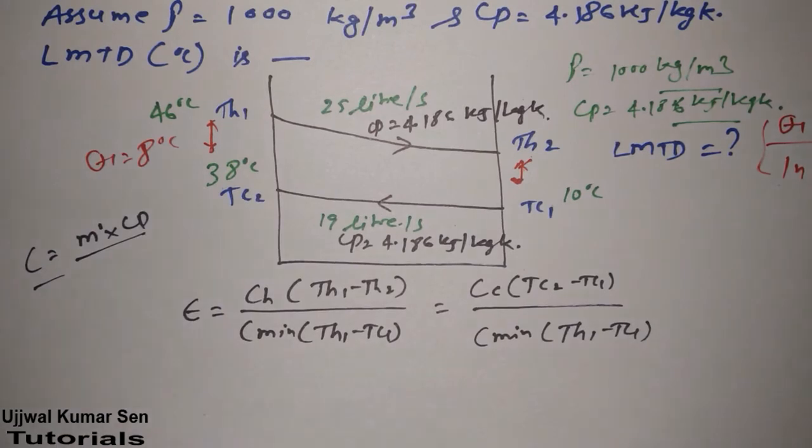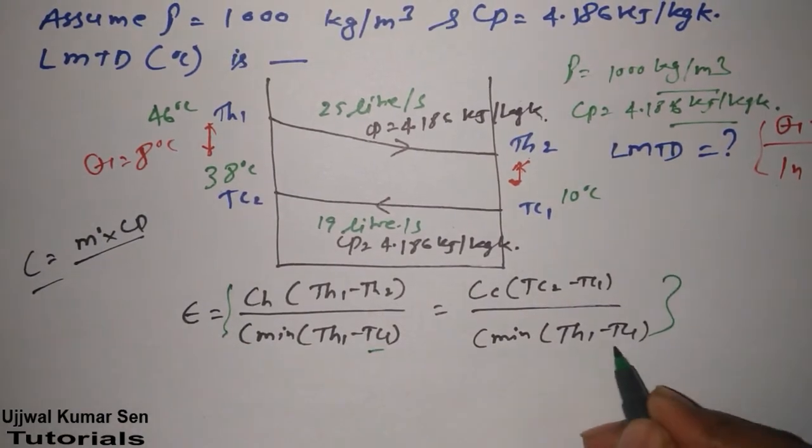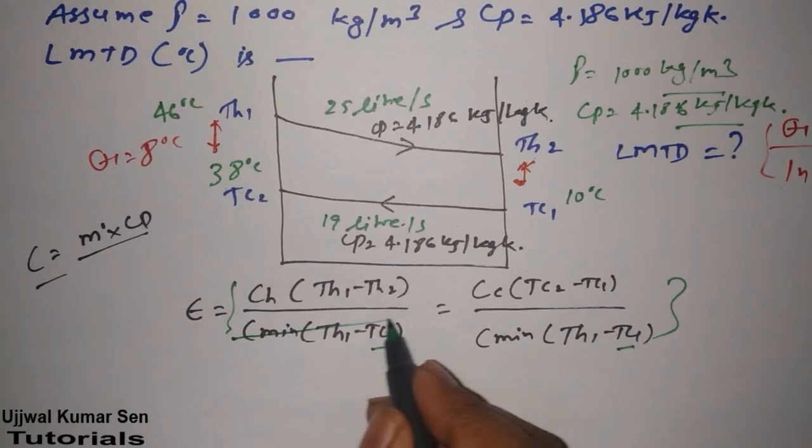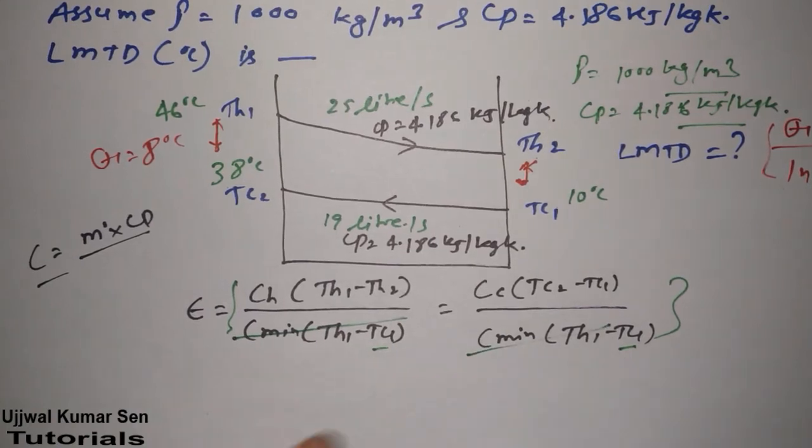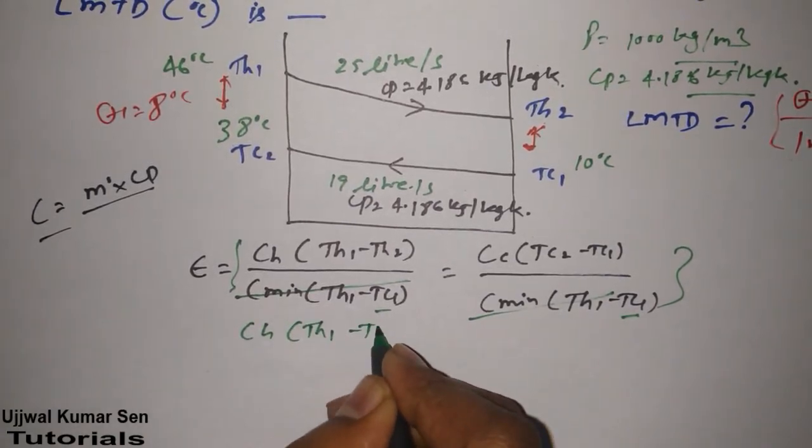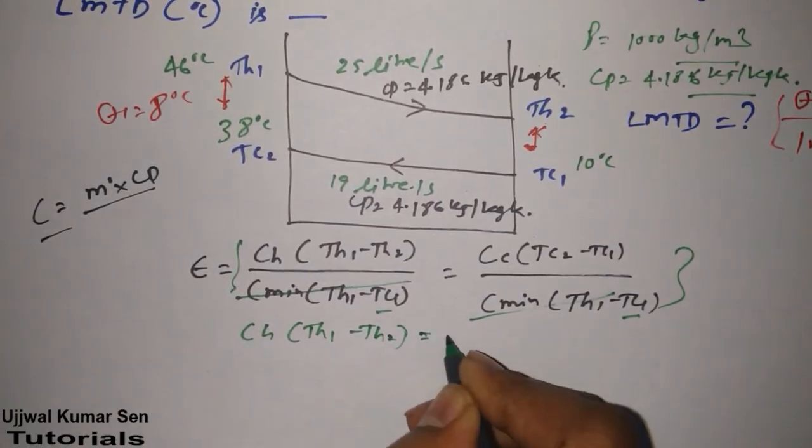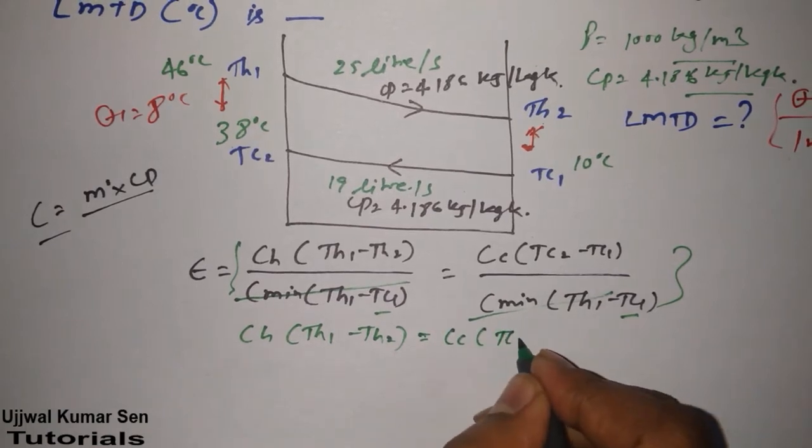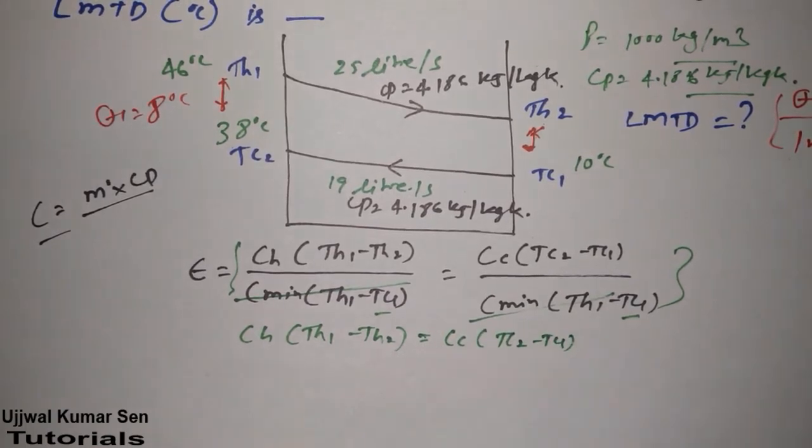Now look at this equation. From this equation let's take this one and this one. So the denominator and denominator will get cancelled. It will become 1. So what we get basically is CH times TH1 minus TH2 equals CC times TC2 minus TC1.